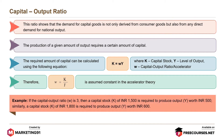For example, if the capital output ratio W is 3, then a capital stock K of Rs. 1500 is required to produce output Y worth Rs. 500. Similarly, a capital stock of Rs. 1800 is required to produce output worth Rs. 600.